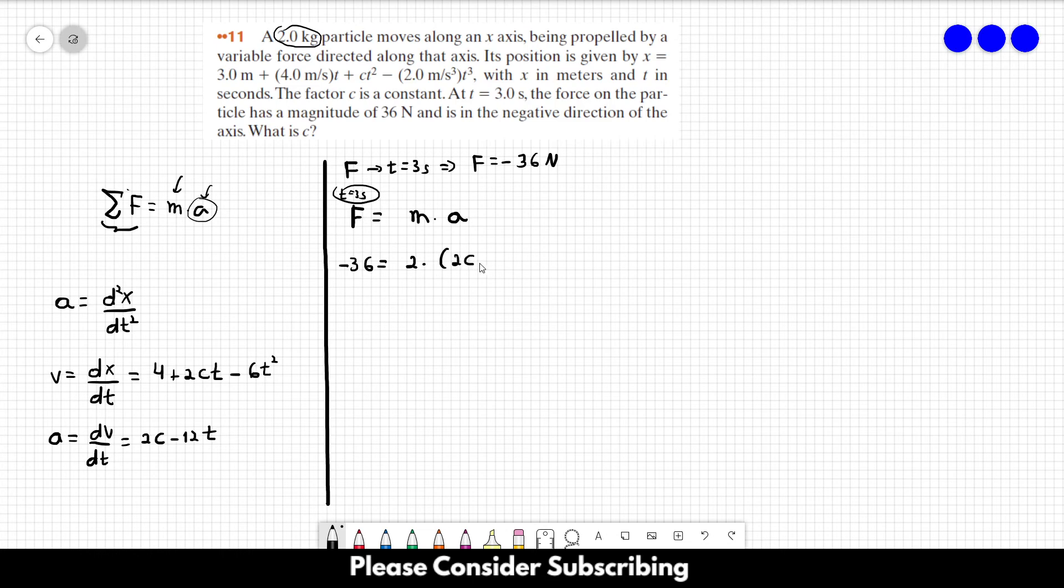Which is 2c minus 12 times 3. And we have that minus 36 is equal to 4c minus, this is 36, 72.